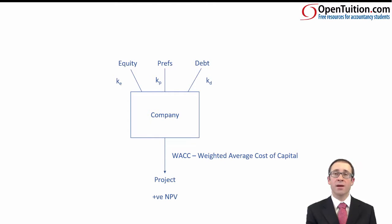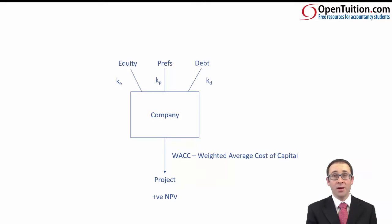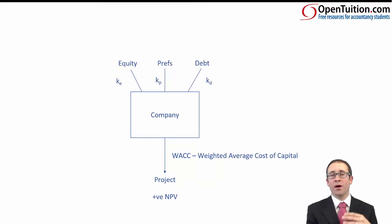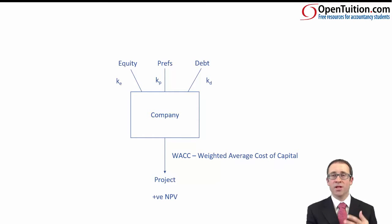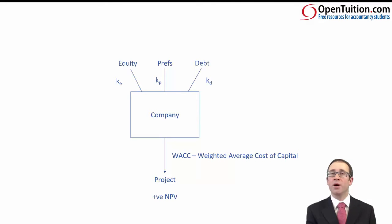What we're going to do is work out a weighted average cost of capital, weighted based upon market values. That weighted average cost of capital is referred to as your WACC. We're working out a return for each of the equity, prefs, and debt holders, and then we're going to weight it based upon the market values.